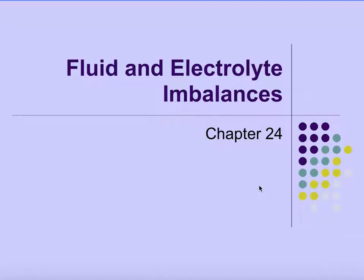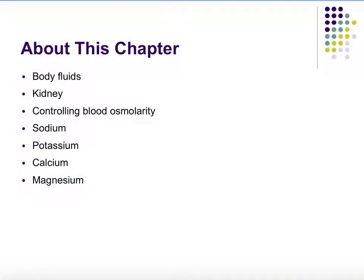Chapter 24: fluid and electrolyte imbalances. In this chapter, we'll talk about our body fluids. We'll discuss the kidneys because we know the kidneys have a huge influence on fluids as well as electrolytes. We'll discuss how we control blood osmolarity and then take a look at some of our ions like sodium, potassium, calcium, and magnesium.